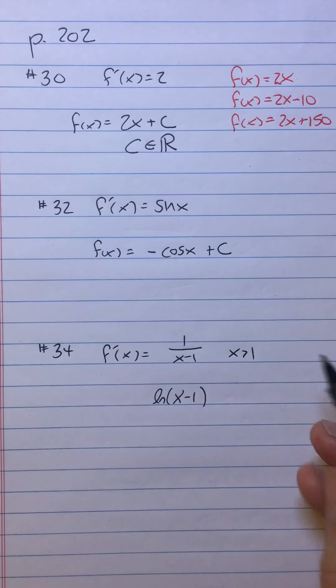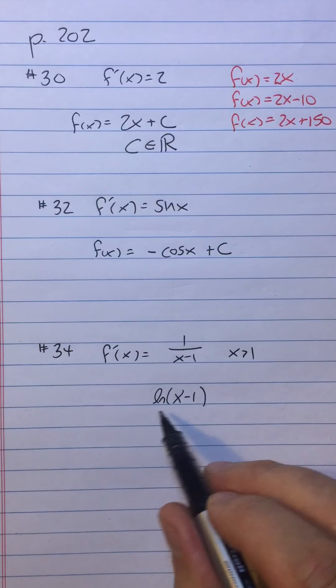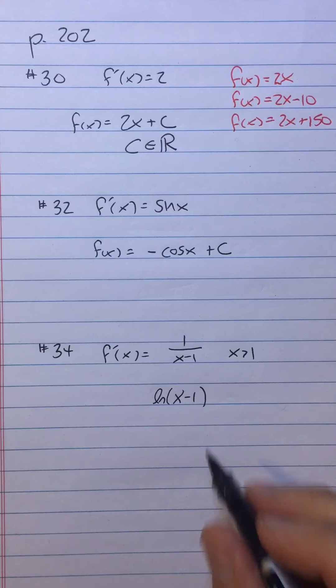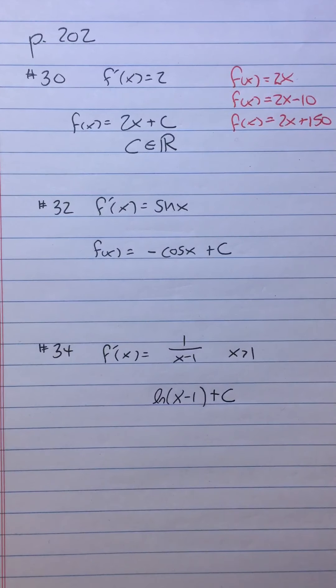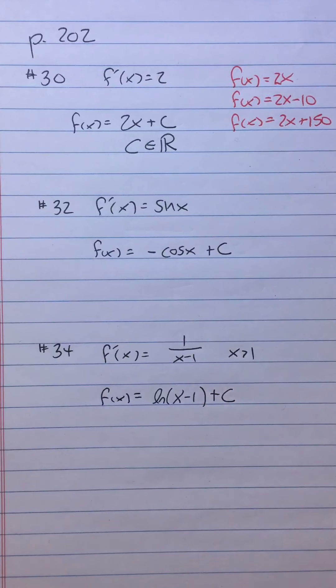Now you also have revealed why they said x is greater than 1, because if x were less than 1, then ln of x minus 1 would be undefined. So now we put on our plus c, so that we've covered all possible values. We're going to say that that's equal to f of x.